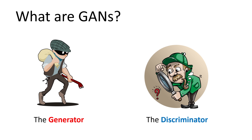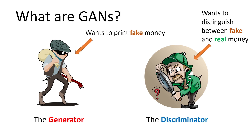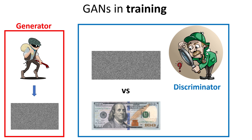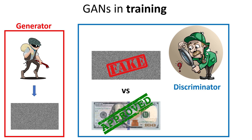To give an example of the game they play: the generator wants to print fake money and the discriminator wants to distinguish between fake and real money. In the training process, the generator tries to print a $100 bill, but at the beginning it only produces something that looks like random noise because it's very bad initially. The detective compares a real $100 bill to that random noise and correctly identifies the generator's output as fake — the generator was not able to fool the discriminator.